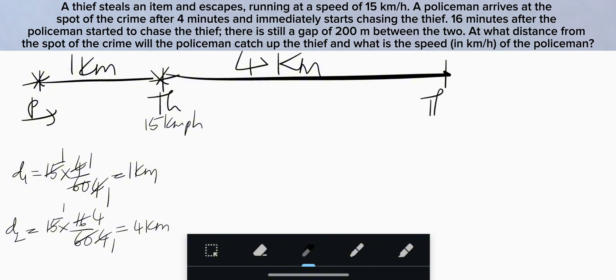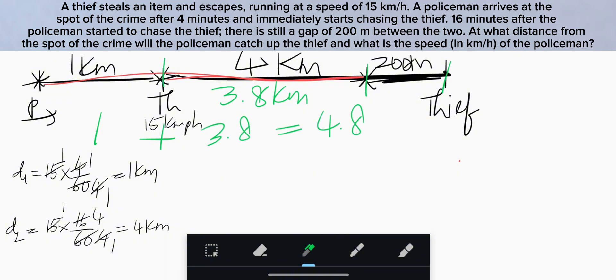After 16 minutes, thief is here traveled 4 kilometers and police is 200 meters behind the thief. So this portion is 200 meters. This entire distance is 4 kilometers. So this portion is 3.8 km. So distance traveled by police in 16 minutes is 1 plus 3.8 which is 4.8 km.